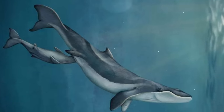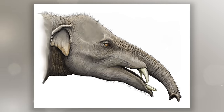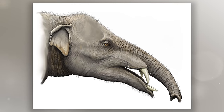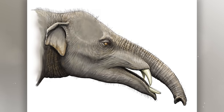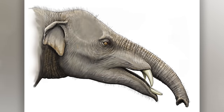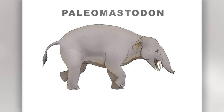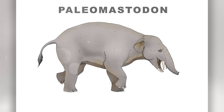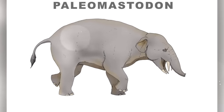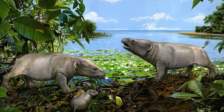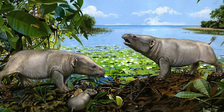At the end of the Eocene the first representatives of elephants called paleomastodonts appeared, as did the first representatives of toothed and baleen whales. Paleomastodonts already had two pairs of tusks on the lower and upper jaws but did not yet have a proboscis. Paleomastodont was the largest of the Eocene proboscideans, weighing up to two tons, while the smallest Eocene proboscideans did not exceed 15 kilograms.